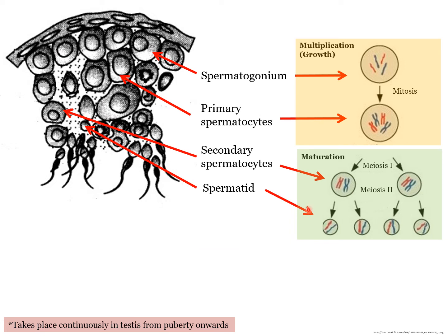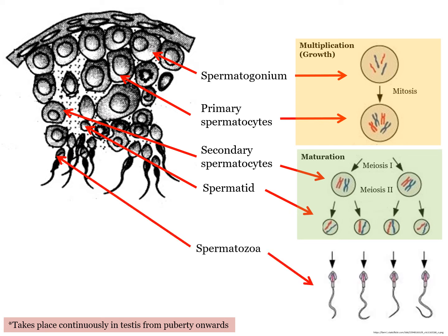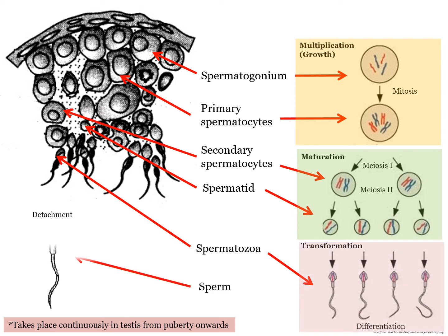After maturation, the spermatid is transformed to become spermatozoa through differentiation. It then detaches from the wall and is now called sperm.